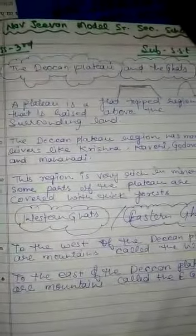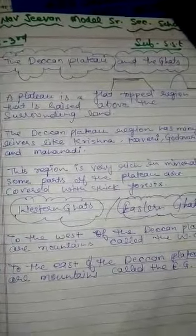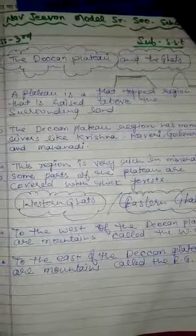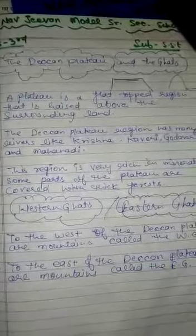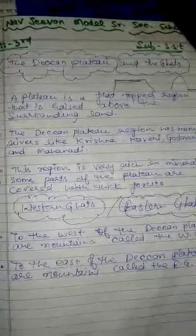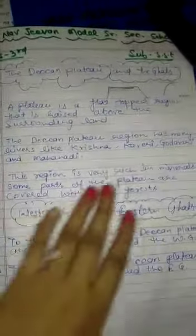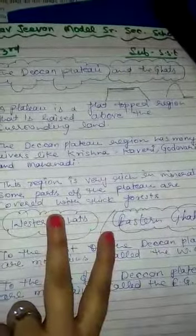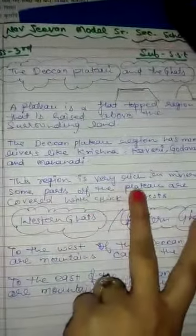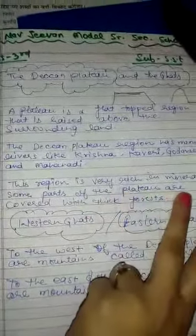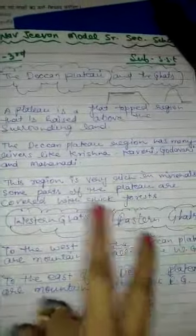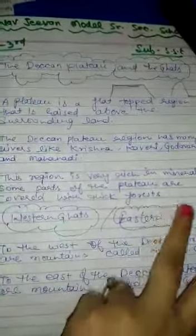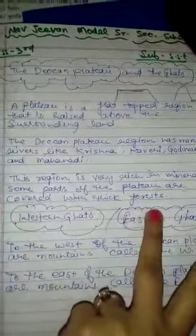A plateau is a flat-top region that is raised above the surrounding land. The Deccan Plateau region has many rivers like Krishna, Kaveri, Godavari, and Mahanadi. This region is very rich in minerals. Some parts of the plateau are covered with thick forest.